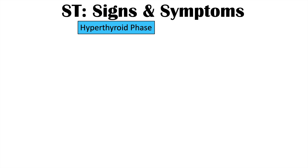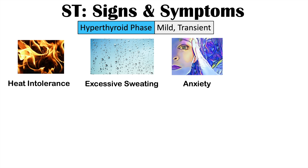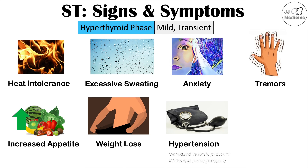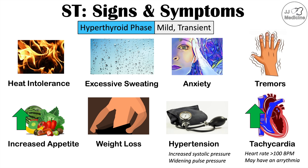As mentioned, there are particular phases of this condition, and a patient may not experience all of them. If they do experience the hyperthyroid phase, it's going to be mild or transient — often the signs and symptoms are mild enough that the patient may not notice them significantly. These can include heat intolerance, excessive sweating, anxiety, tremors, and increased appetite, but even with increased appetite they may have weight loss. They can have hypertension — more specifically increased systolic pressure and a widening pulse pressure — as well as tachycardia (heart rate greater than 100 beats per minute) and possibly an arrhythmia. Patients may have hyperthyroidism on blood work but not have these symptoms.